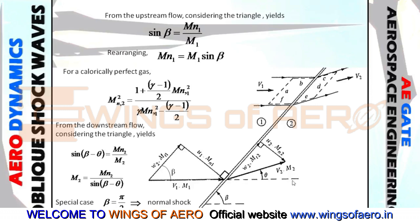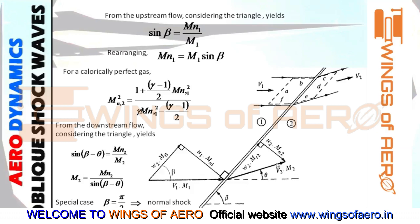Now consider the downstream flow triangle. From the horizontal to the oblique shock wave is angle beta. The deflection angle is theta. So this region of the triangle has angle beta minus theta. Taking the sine component: sine(beta minus theta) equals height over hypotenuse, giving Mn2 over M2. Rearranging: M2 equals Mn2 divided by sine(beta minus theta).